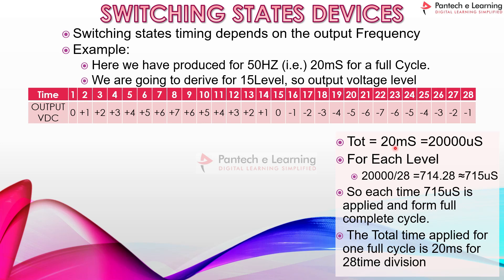For the calculation: 20 milliseconds equals 20,000 microseconds. For each level, 20,000 microseconds is divided by 28 time divisions because the full cycle is completed in 28 steps. This gives 714.28, approximated to 715 microseconds. So for one time division, the switching cycle is on for 715 microseconds, and after 28 time divisions the full 20-millisecond cycle is completed.